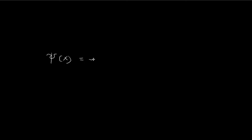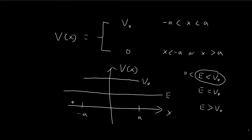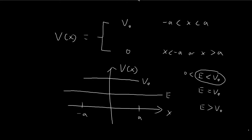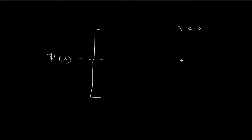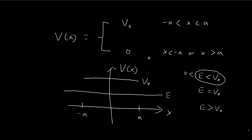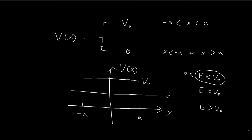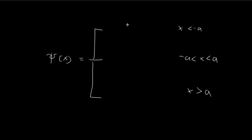What we want to do is solve the time-independent Schrödinger equation to get our ψ of x. Our ψ of x is going to be split into three different regions: the region where x is smaller than negative a, the region where x is between negative and positive a, and the region where x is larger than a. We're going to solve the time-independent Schrödinger equation for these three regions and get three separate expressions.